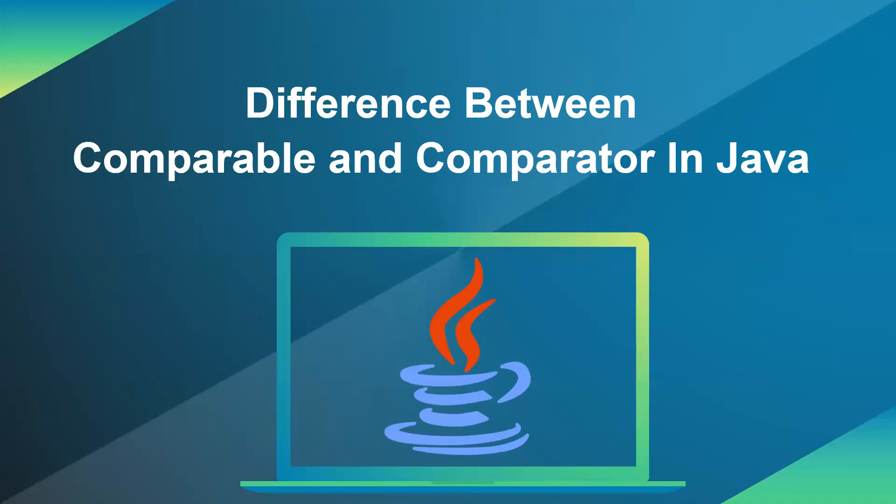Hi everyone. In this video we are going to discuss differences between comparable and comparator interfaces in Java. Both comparable and comparator interfaces are used to sort collection elements based on data members of the class. Let us understand each of them with an example.